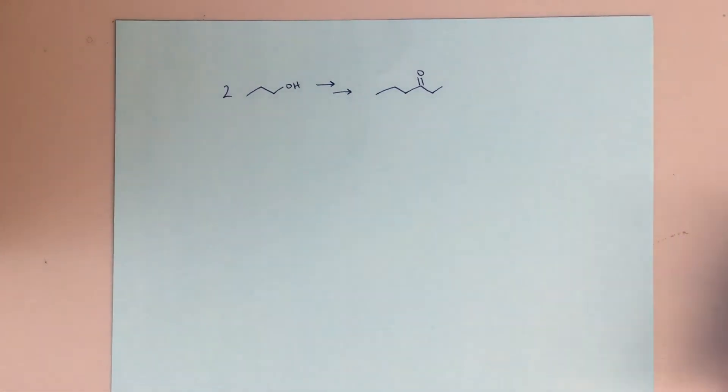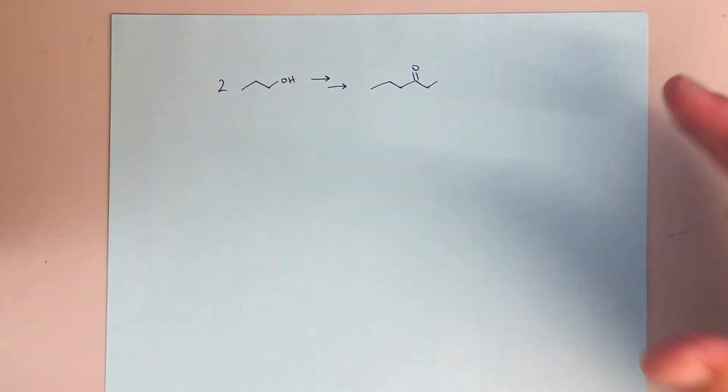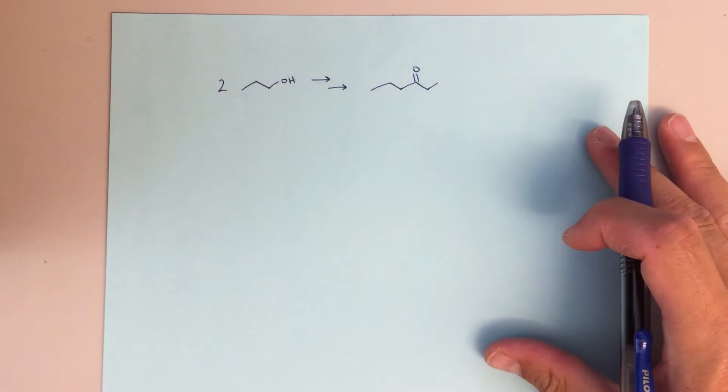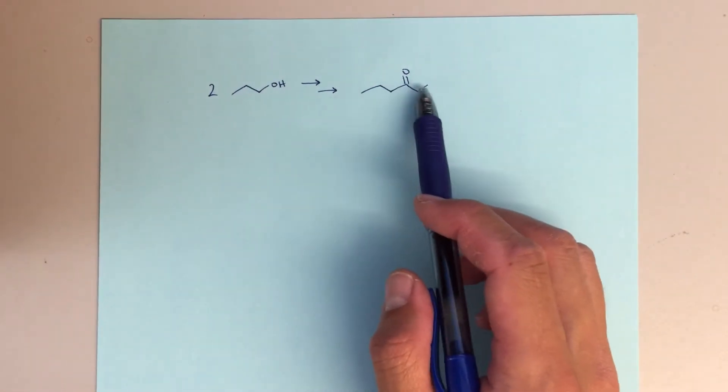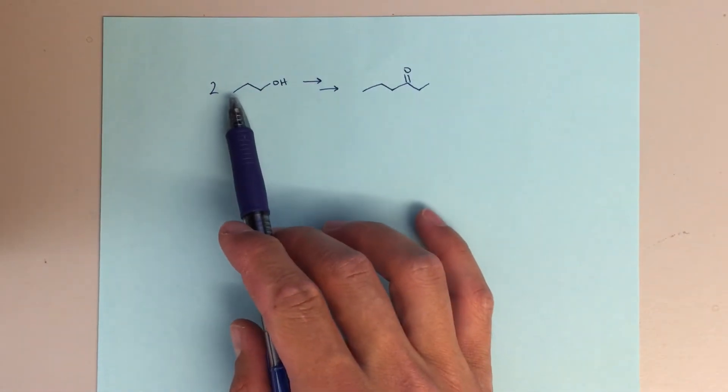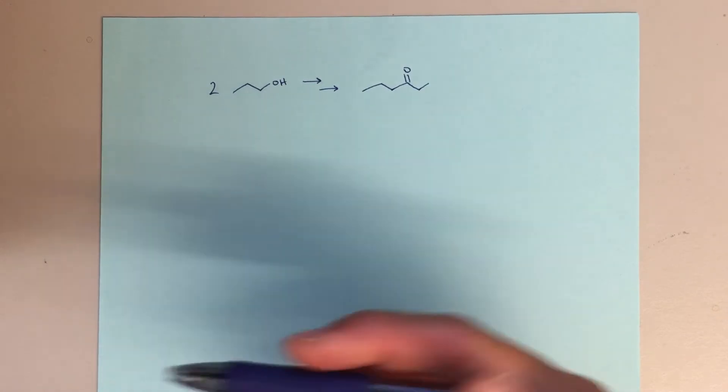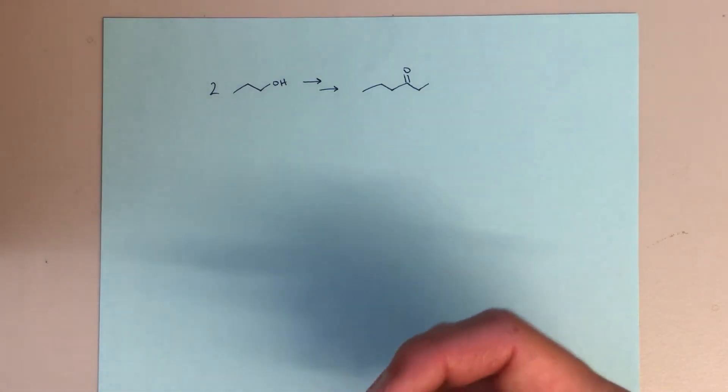Alright class, so this is my video for this multi-step synthesis problem. The question here is saying, can you make this ketone starting from just N-propyl alcohol as your source for carbon?